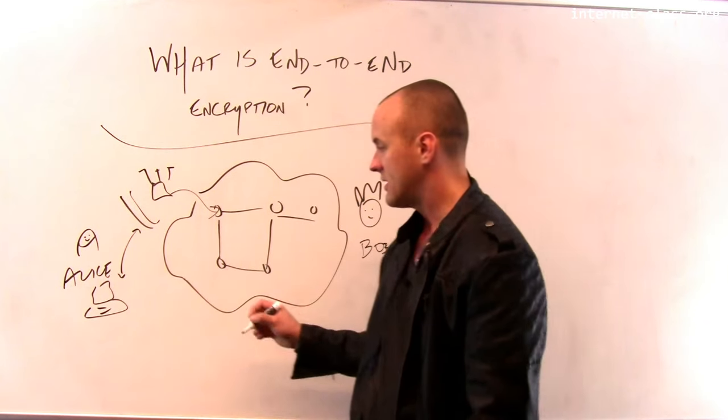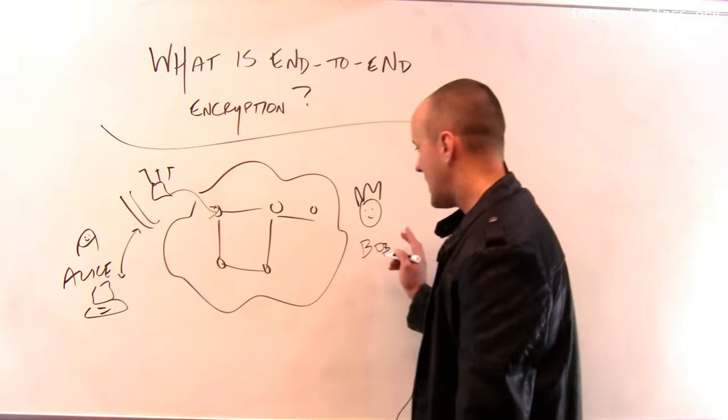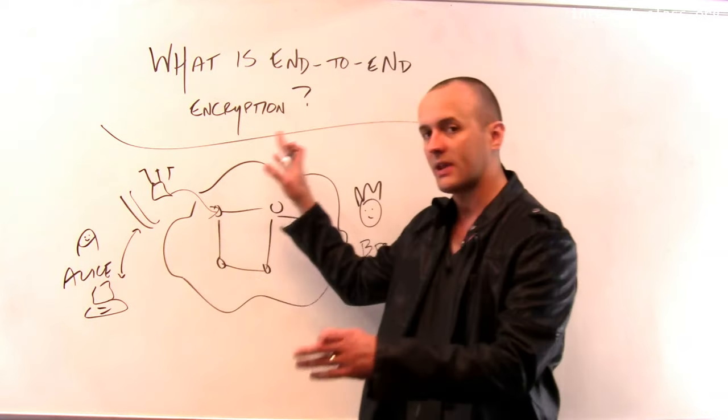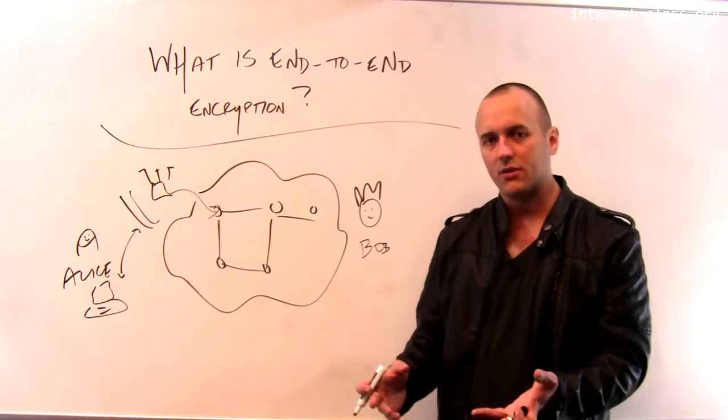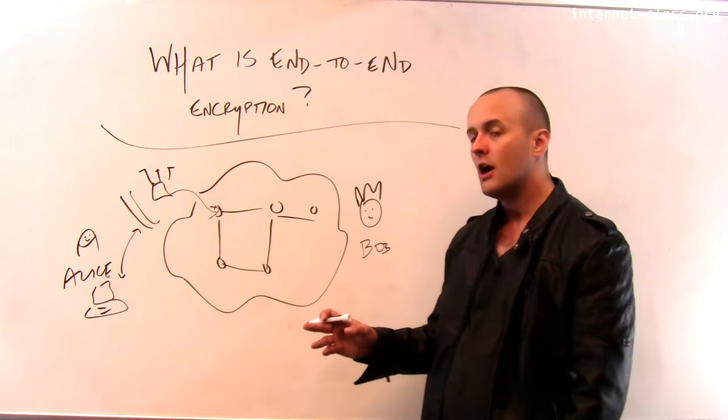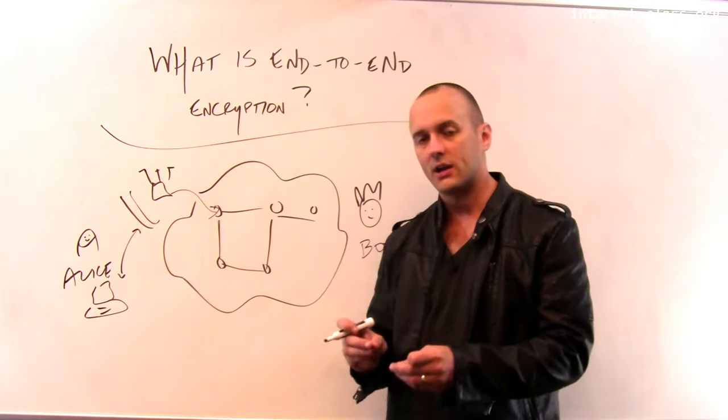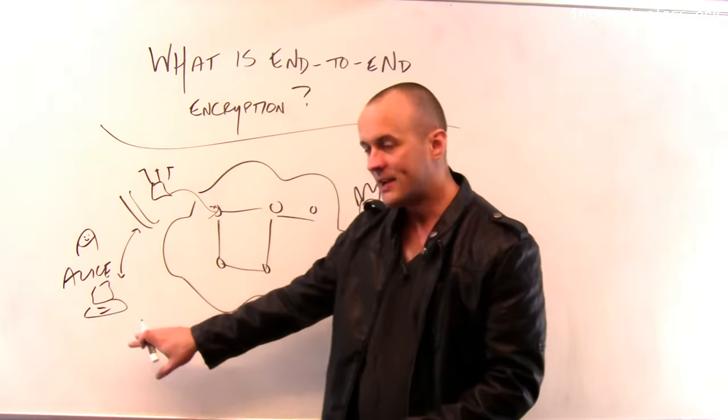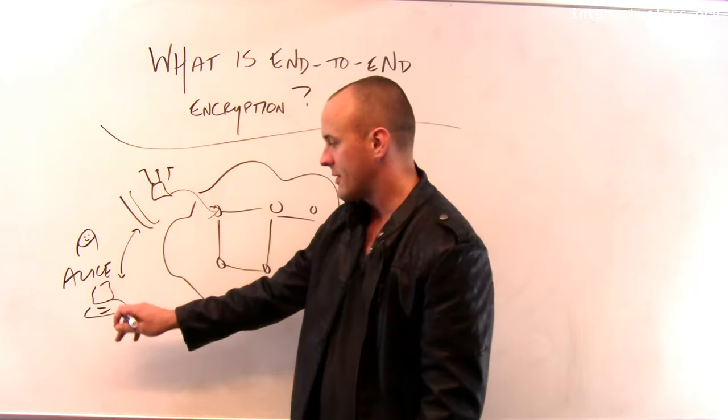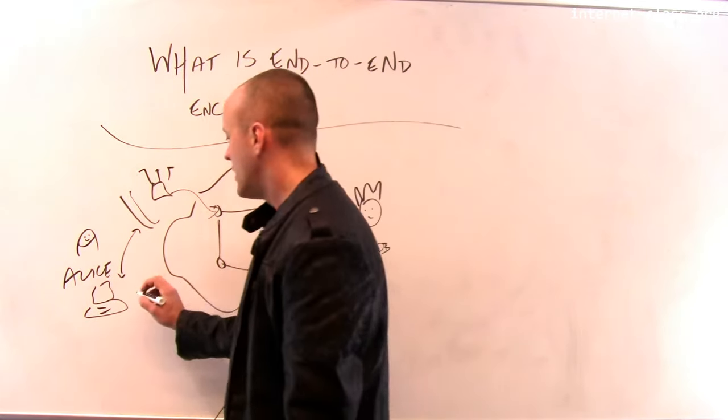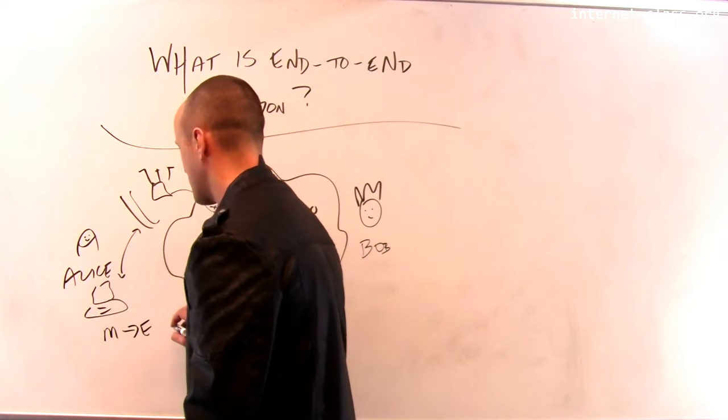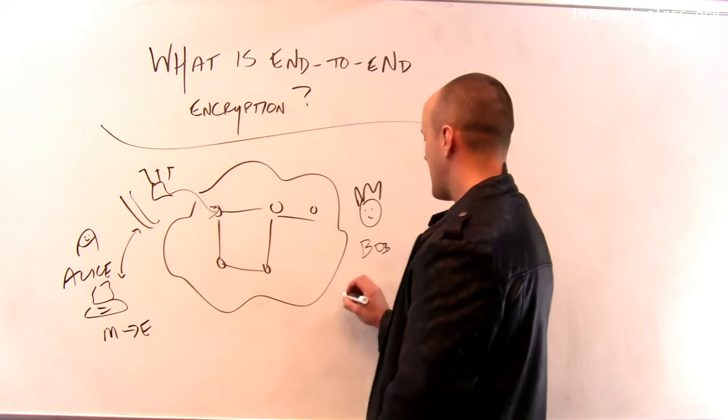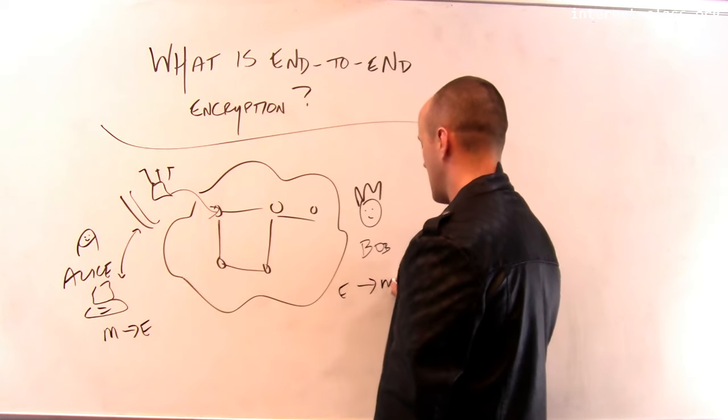So end-to-end encryption involves Alice and Bob, or Alice and Google.com, or Alice and Microsoft.com, or the websites that you go to - the various services that you use online - agreeing that we're going to encrypt the traffic at Alice and decrypt it at Bob and vice versa. So any message that Alice sends to Bob, she's going to encrypt it locally. I'm going to take my message and produce my ciphertext, and I'm going to send that over to Bob, and Bob is going to decrypt it.